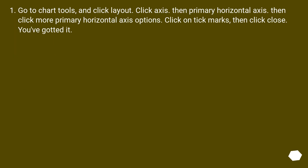Go to Chart Tools and click Layout. Click Axis, then Primary Horizontal Axis, then click More Primary Horizontal Axis Options. Click on Tick Marks, then click Close. You've got it.